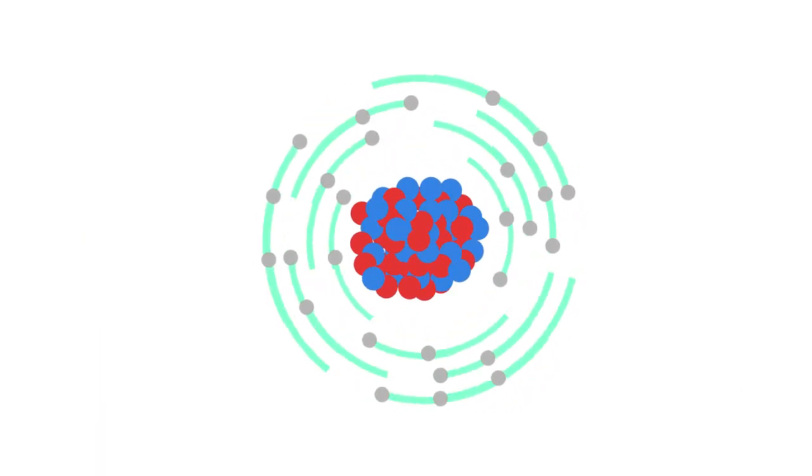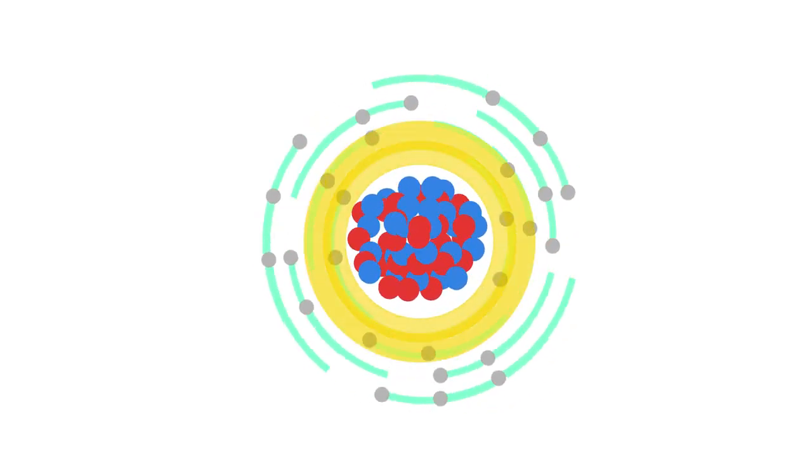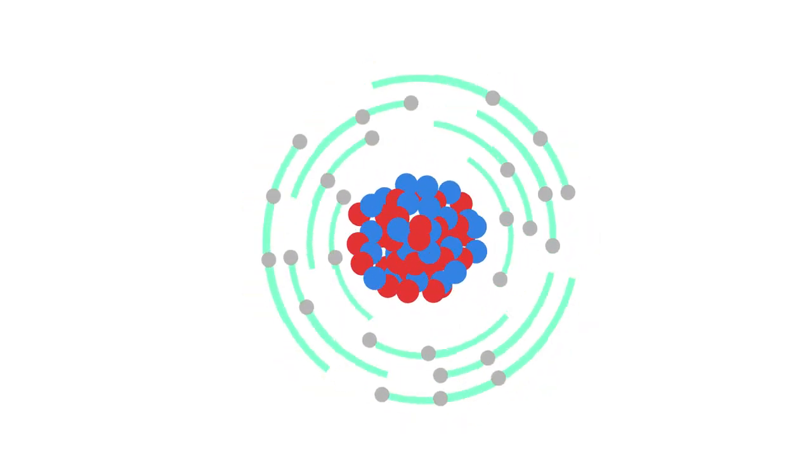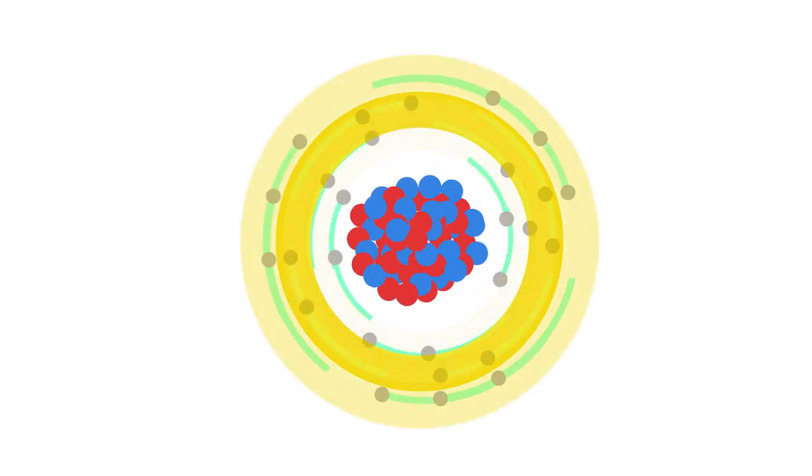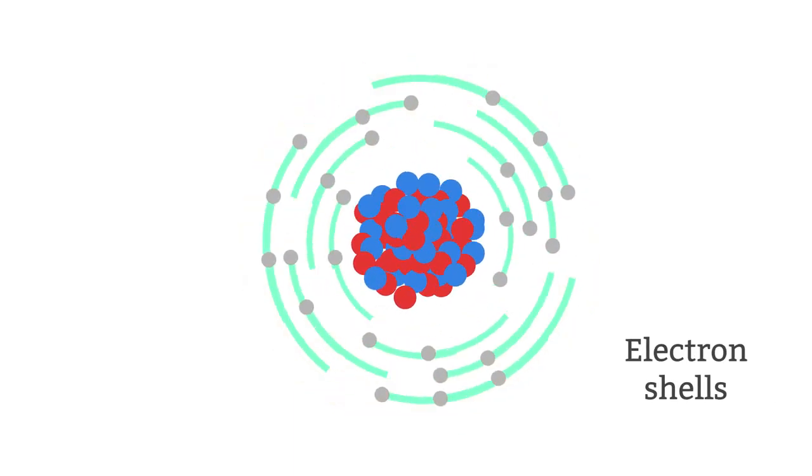Electrons surrounding the nucleus of an atom aren't completely free. They are restricted to moving in fixed orbitals or energy levels. Each energy level can take a certain number of electrons before it is full and any more electrons have to occupy a level further out.